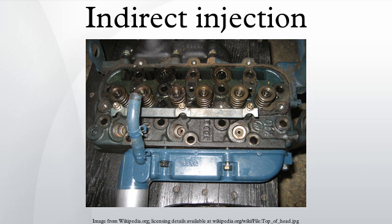Regarding classification of indirect combustion chambers: the swirl chamber consists of a spherical chamber located in the cylinder head and separated from the engine cylinder by a tangential throat. About 50% of the air enters the swirl chamber during the compression stroke of the engine, producing a swirl. After combustion, the products return through the same throat to the main cylinder at much higher velocity, so more heat is lost to the walls of the passage.